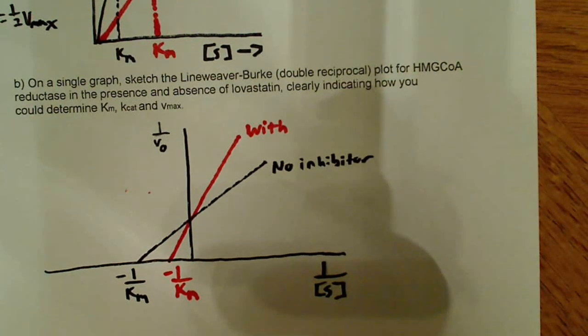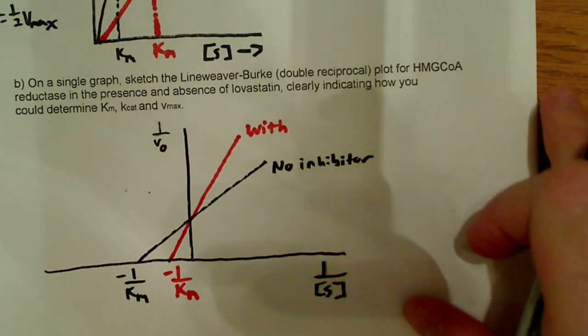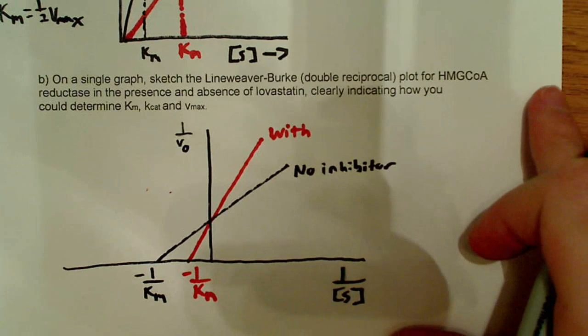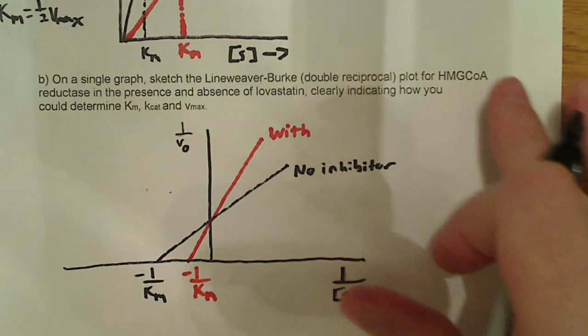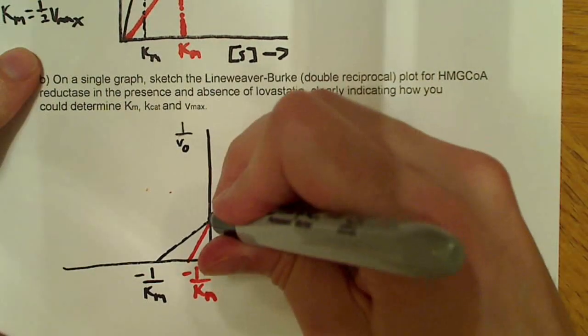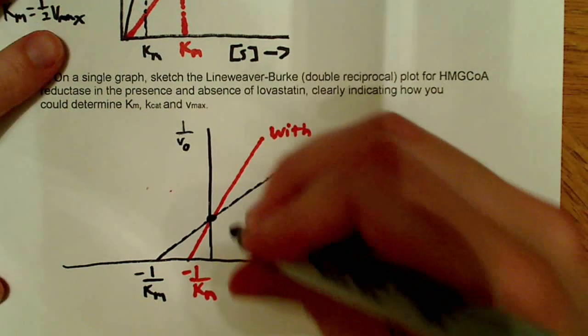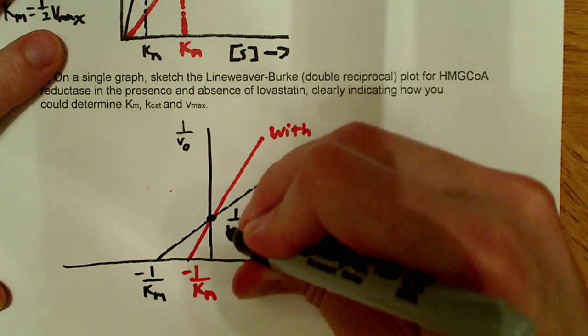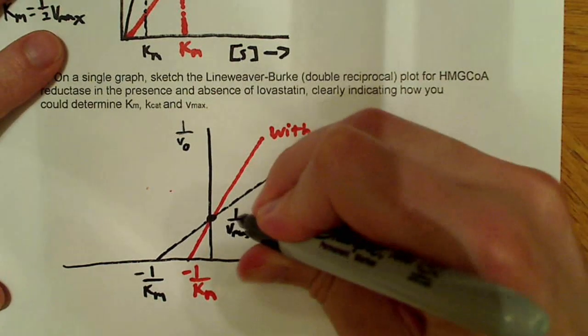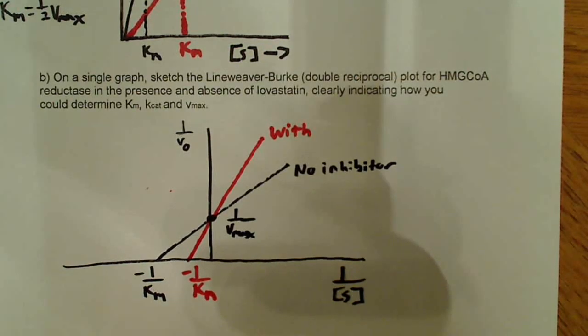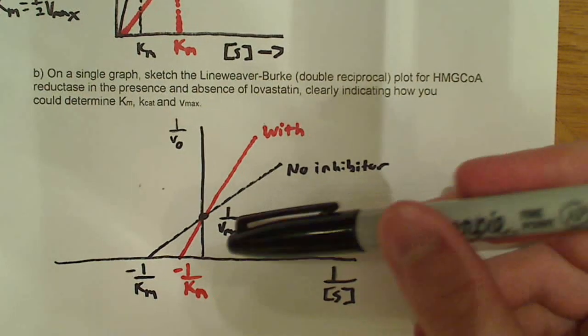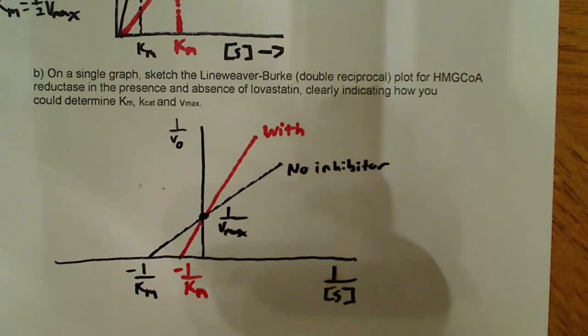And recall, remember I said the most important thing about any of these graphs, when it comes to asking you, especially about a competitive inhibitor, is that the Vmax is the same. And there it is. They cross the same point on the y-axis, and that point is known as 1 over Vmax. And that's how you could calculate that as well. And if you had numbers, this would be very easy to get. Just divide whatever you get by 1 to get your answer.